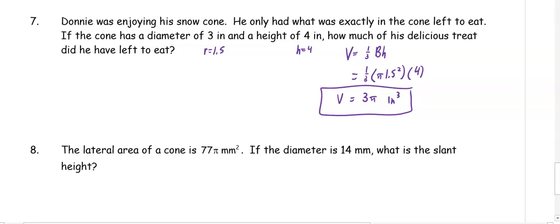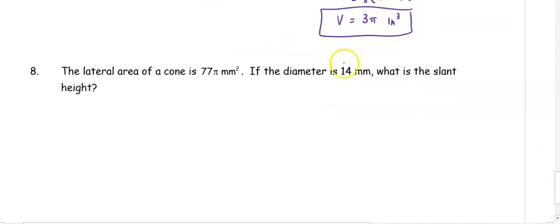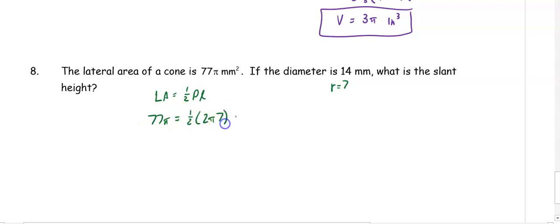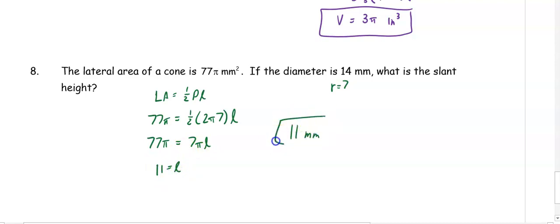In number eight, the lateral area of the cone is 77 pi millimeters squared and the diameter is 14 — find the height. Since the diameter is 14, the radius is 7. Lateral area equals one half perimeter times slant height, so 77 pi equals one half times two pi times seven times the slant height. That gives 77 pi equals 7 pi times the slant height. Dividing both sides by 7 pi, we get 11 equals the slant height, so the slant height is 11 millimeters.